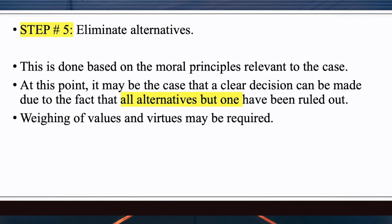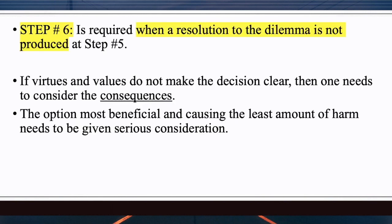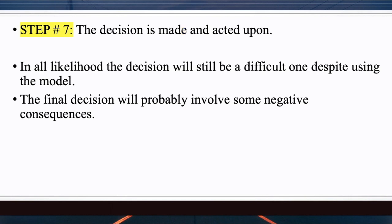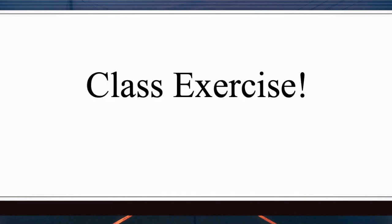That may be difficult, which is why we get to step six. When a resolution to the dilemma is not produced in step five, you need to look at the consequences of the decision making. Then step seven — the decision is made and acted upon. In all likelihood the decision will still be difficult, and there may be negative consequences for the decision that is made.